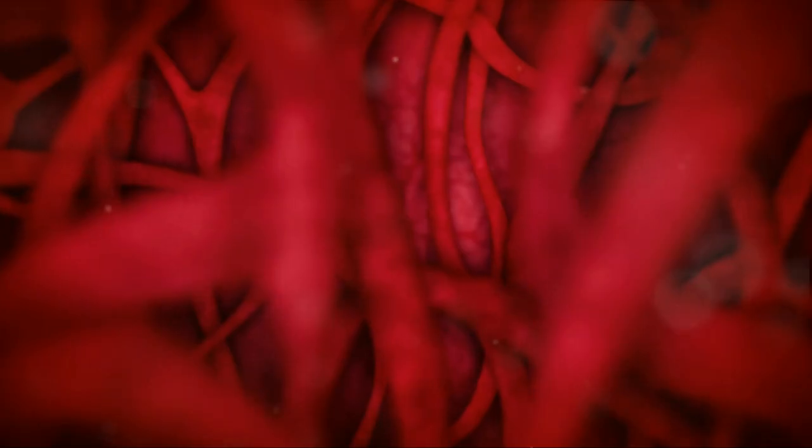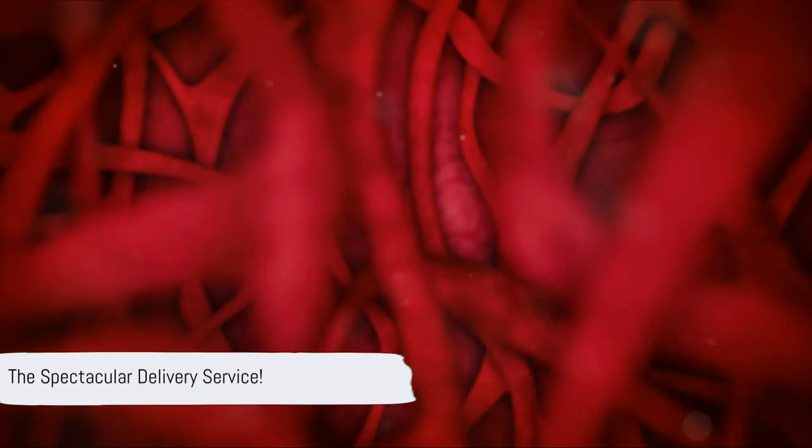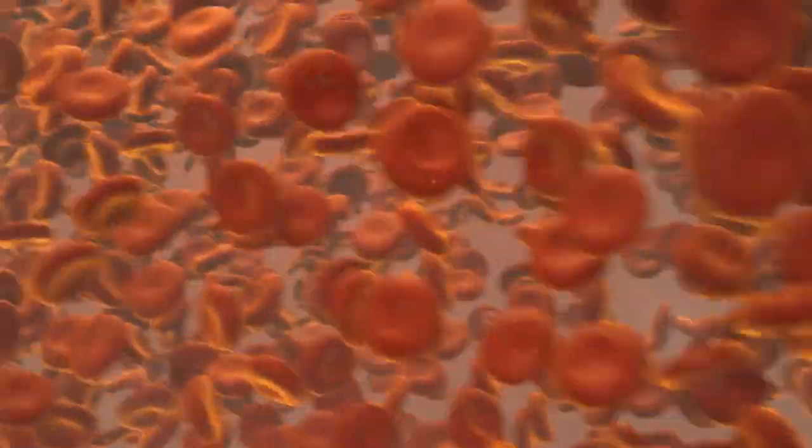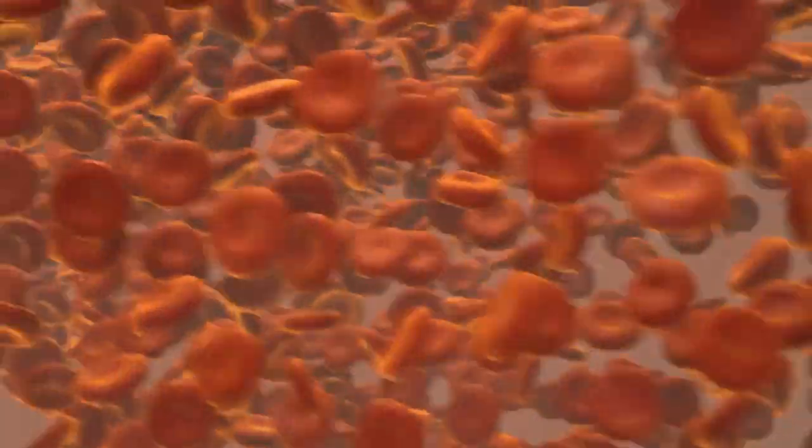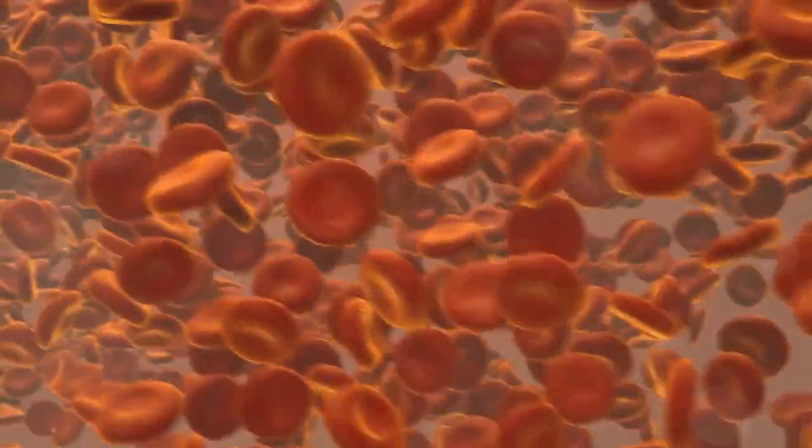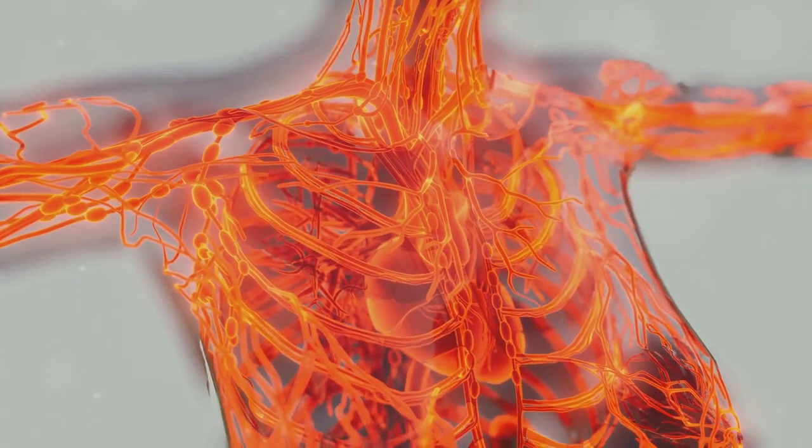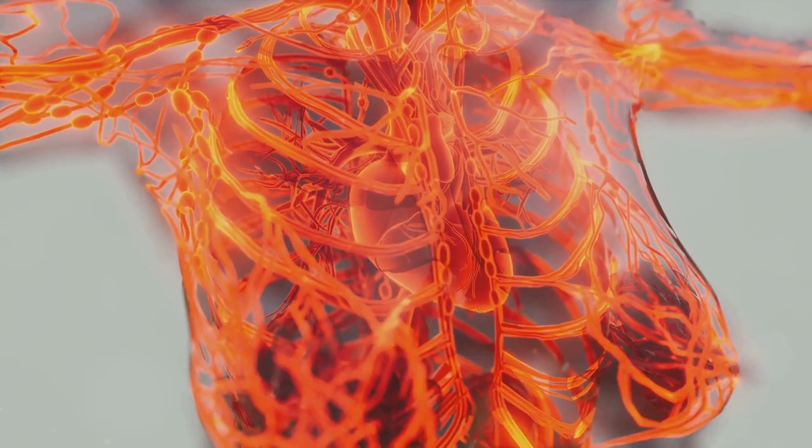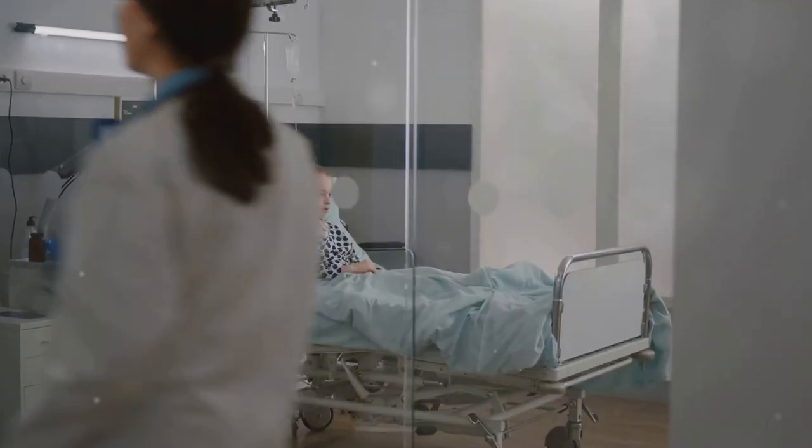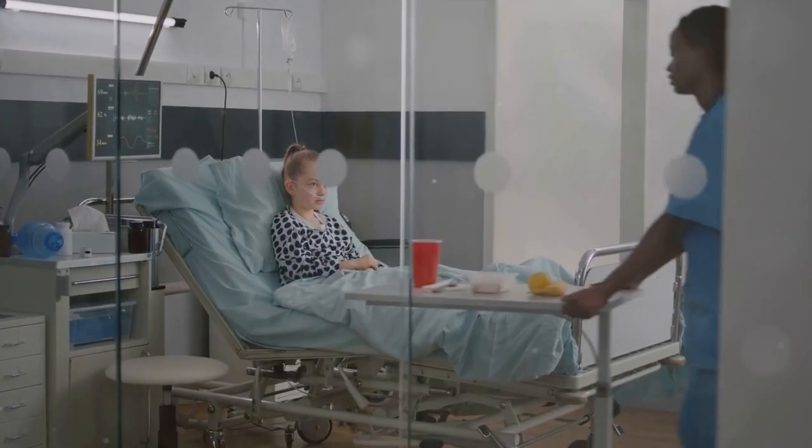Ever wondered why blood needs to circulate? Well, it's like a spectacular delivery service. It carries precious cargo—oxygen and nutrients—to all parts of our body. And guess what? It also picks up waste, like carbon dioxide, for disposal. It's like a delivery service, but instead of pizza, it's delivering life-saving oxygen and nutrients.